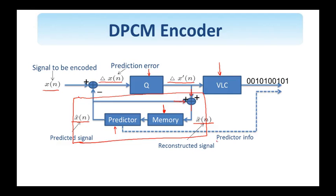In addition, the decoder must have the predictor information — the linear prediction coefficients — available. We can send these coefficients once for the whole image if static prediction is performed, or update the prediction coefficients as we move through different parts of the image. We will encounter this encoder block diagram again when we discuss video encoding, where prediction will be done in the temporal direction using motion vectors.